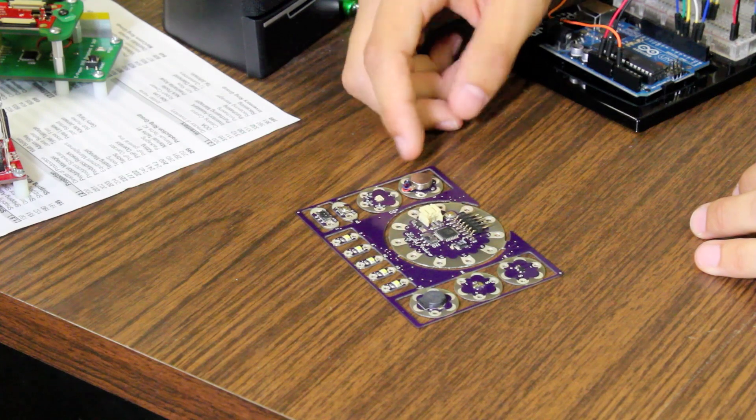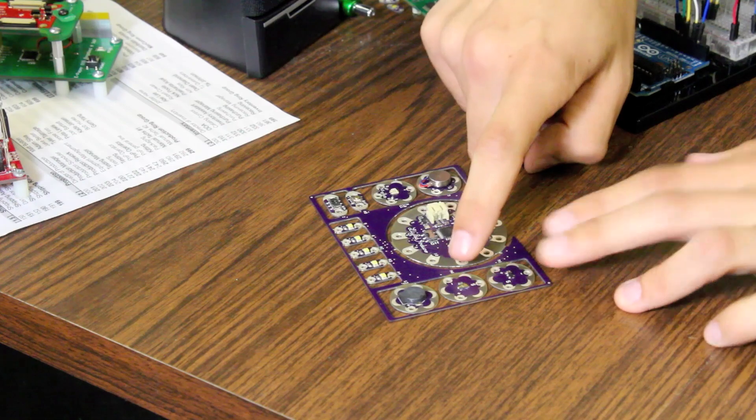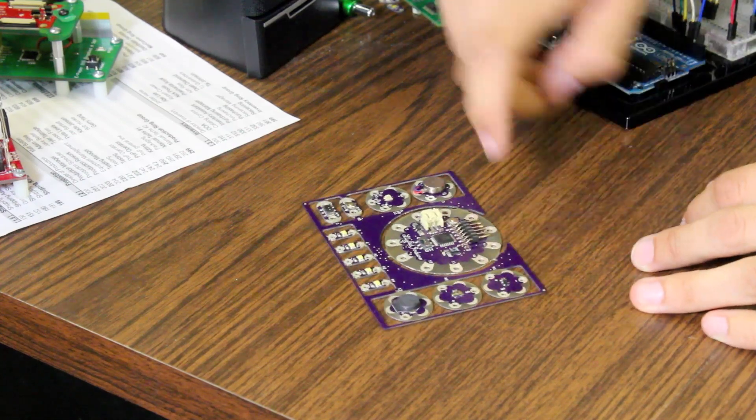And then surrounding that are just a few inputs and outputs. We got a vibration motor, an RGB LED, a button, a switch, some white LEDs, a buzzer, a light sensor, and a temperature sensor.